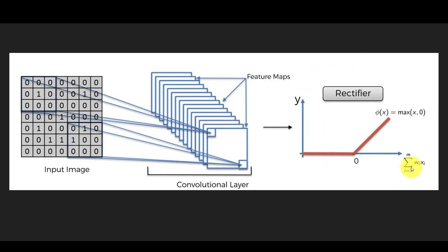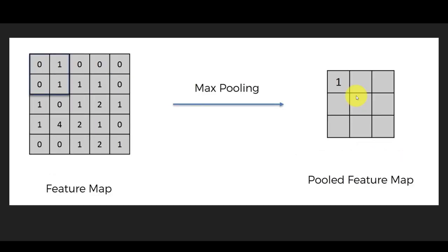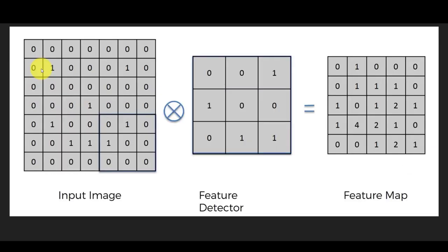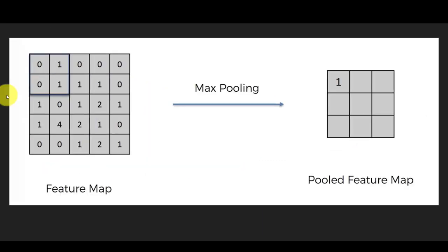Once we have the convoluted image, we apply an activation function. After that, the next step is max pooling. For the feature detector or filter, typical sizes are 3×3, 5×5, or 7×7 matrices — here we used 3×3. For pooling, the usual size is 2×2. These are all trial-and-error choices; whatever works best for our use case is what we'll use.